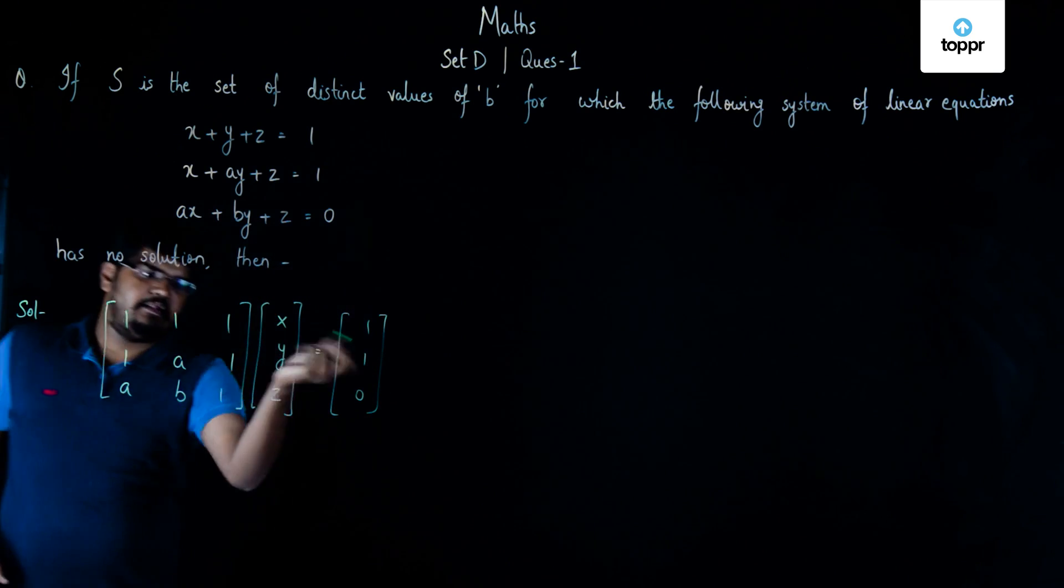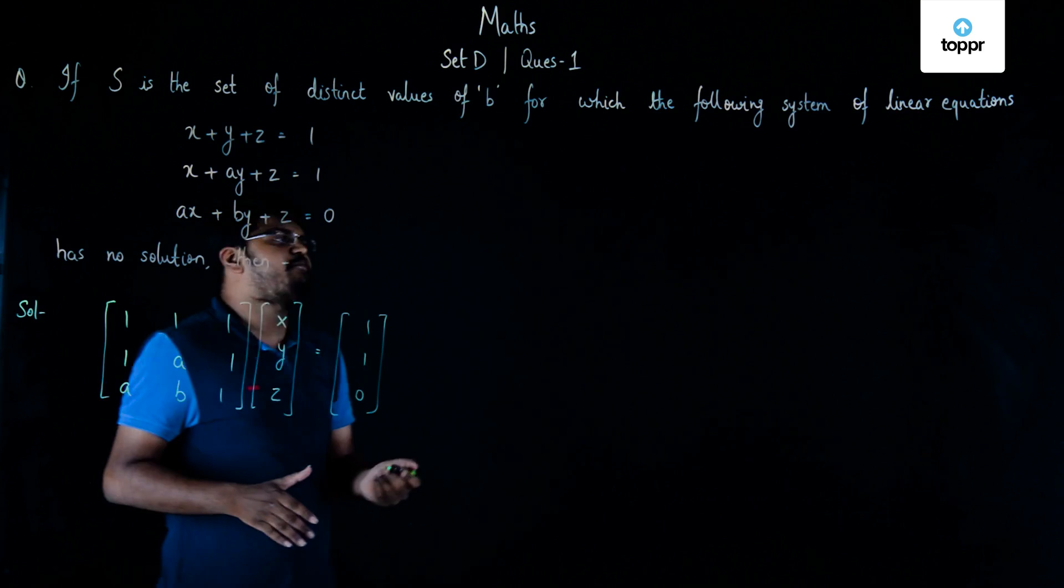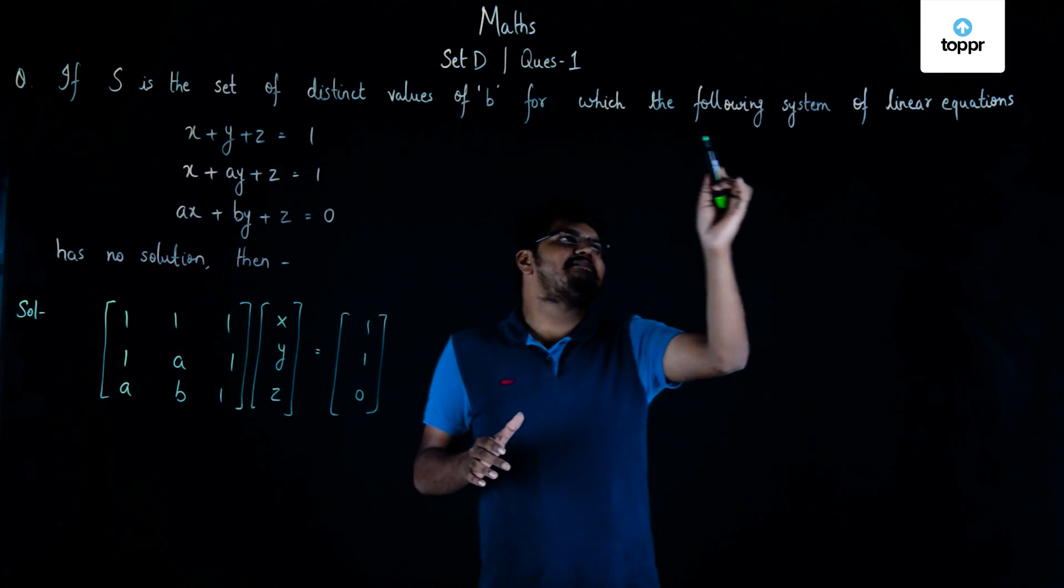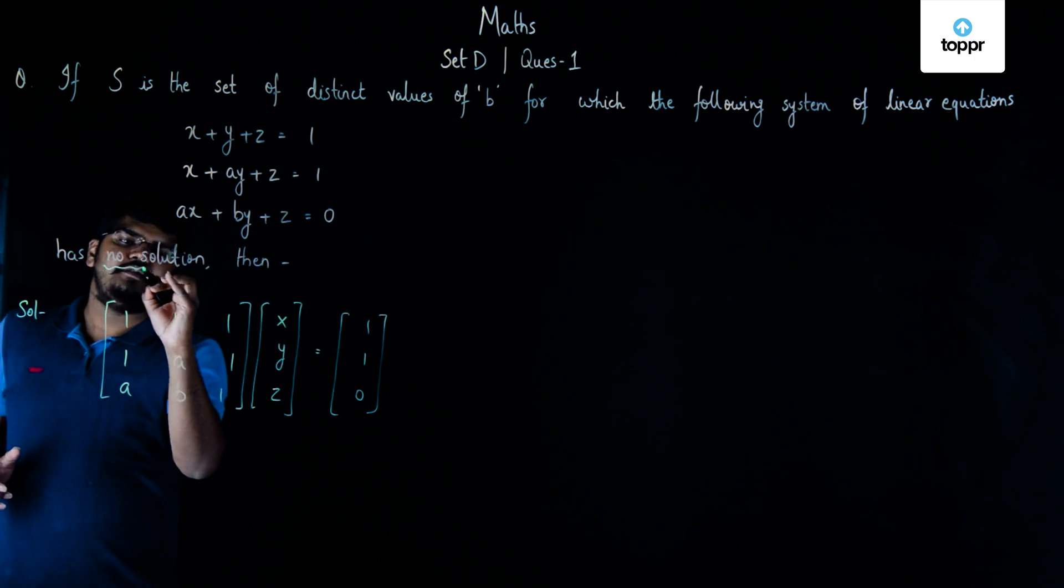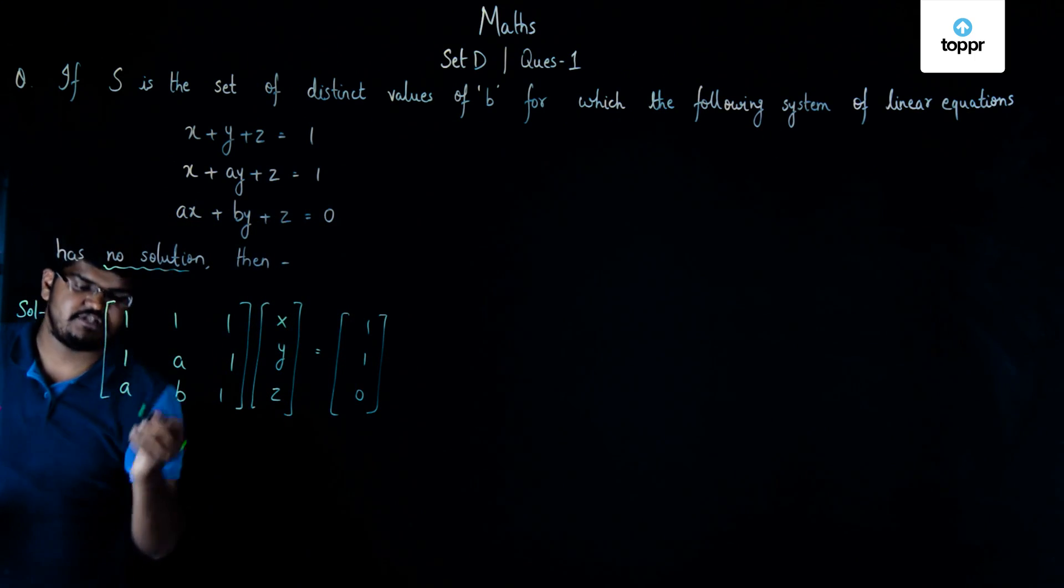Now, let's solve this here according to this particular equation. This given system of linear equations has no solutions, and for this system having no solution, we will have to say that the determinant of this particular matrix is 0.